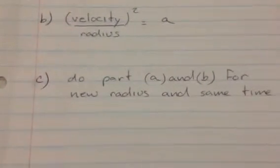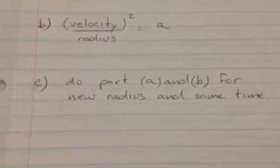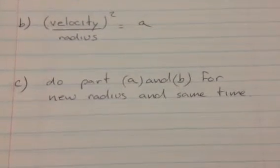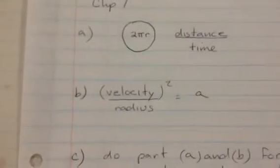And in Part C, they give you a new value for radius, and you have to do basically Parts A and B over again for the new value. You still use the same time, but the new radius determines both Part A and B.